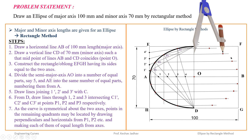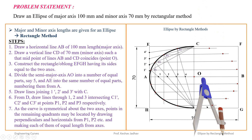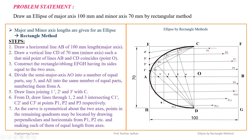After getting all the points, give them numbering: P1, P2, P3, P4, P5, P6, P7, P8, P9, P10, P11, P12, P13, P14, P15, P16. Now we have a full set of points, and connecting them by a smooth curve gives the complete ellipse.